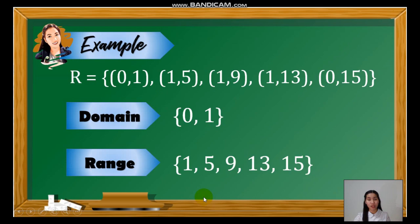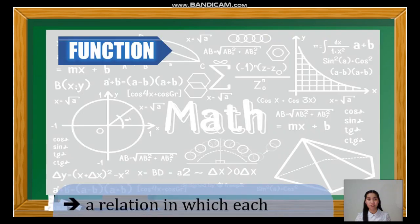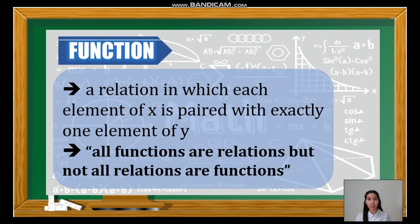We have the set of y values: 1, 5, 9, 13, and 15. Now, in this example, since in the domain the x values repeated, this is an example of a special type of relation, which is called a function. A function is a relation in which each element of x is paired with exactly one element of y, meaning no x value is repeated. Since function is a relation, then we can say that all functions are relations, but not all relations are functions.